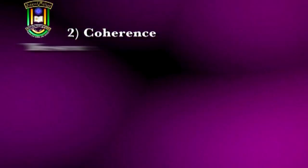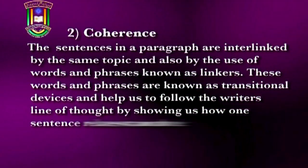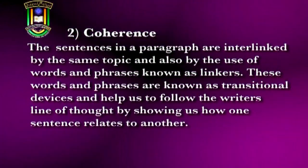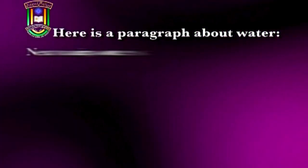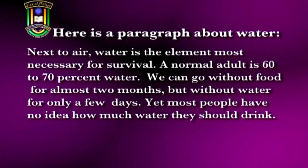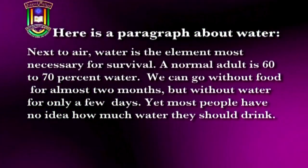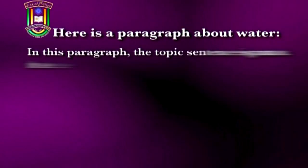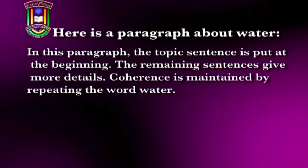Coherence: the sentences in a paragraph are interlinked by the same topic and by the use of words and phrases known as linkers, or transitional devices. These help us follow the writer's line of thought by showing how one sentence relates to another. Here is an example paragraph about water: 'Next to air, water is the element most necessary for survival. A normal adult is 60 to 70 percent water. We can go without food for almost two months, but without water for only a few days, yet most people have no idea how much water they should drink.' In this paragraph, the topic sentence is at the beginning, the remaining sentences give more details, and coherence is maintained by repeating the word 'water.'